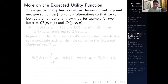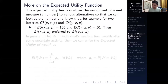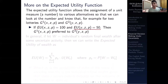The expected utility function allows for the assignment of a number to various alternatives so that we can look at the number and know, for example for two lotteries, which you prefer. For example, if the expected utility from gamble one is 100 and the expected utility from gamble two is 50, then since 100 is greater than 50 you prefer partaking in gamble one. You are not assured a higher monetary payoff from gamble one, but on the basis of the probabilities and the initial gamble information you are more likely to get a better result.